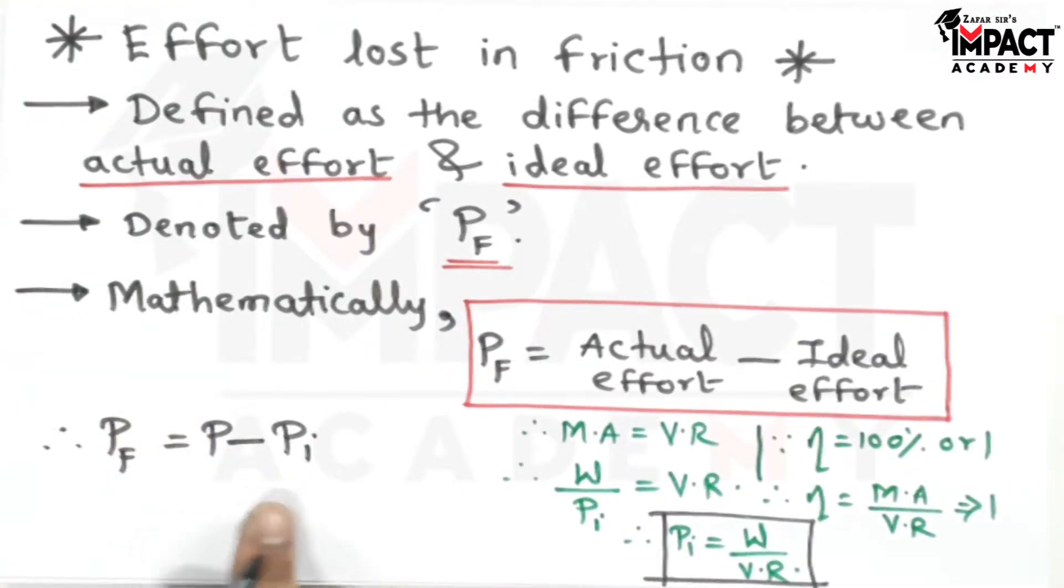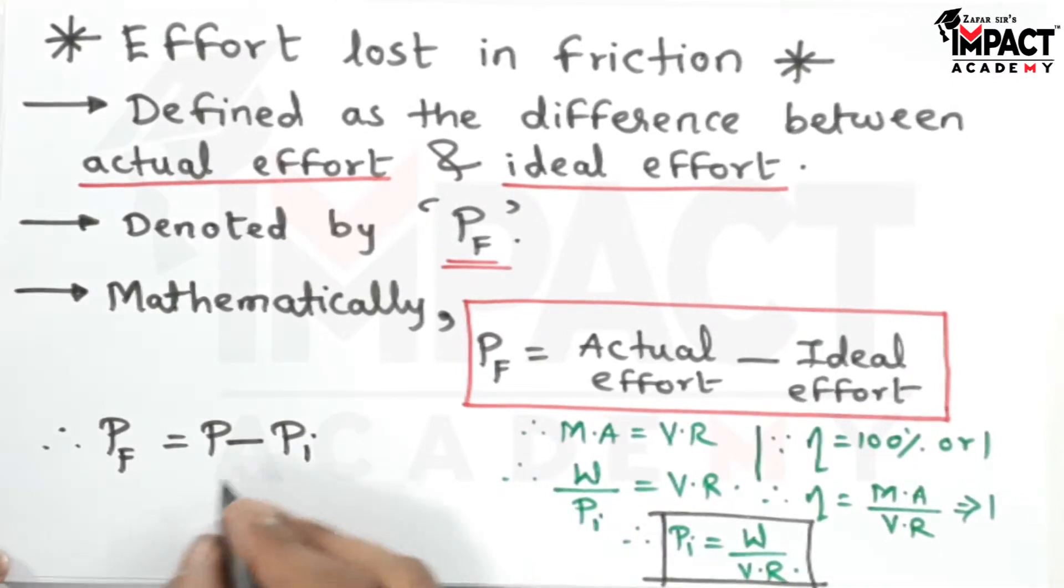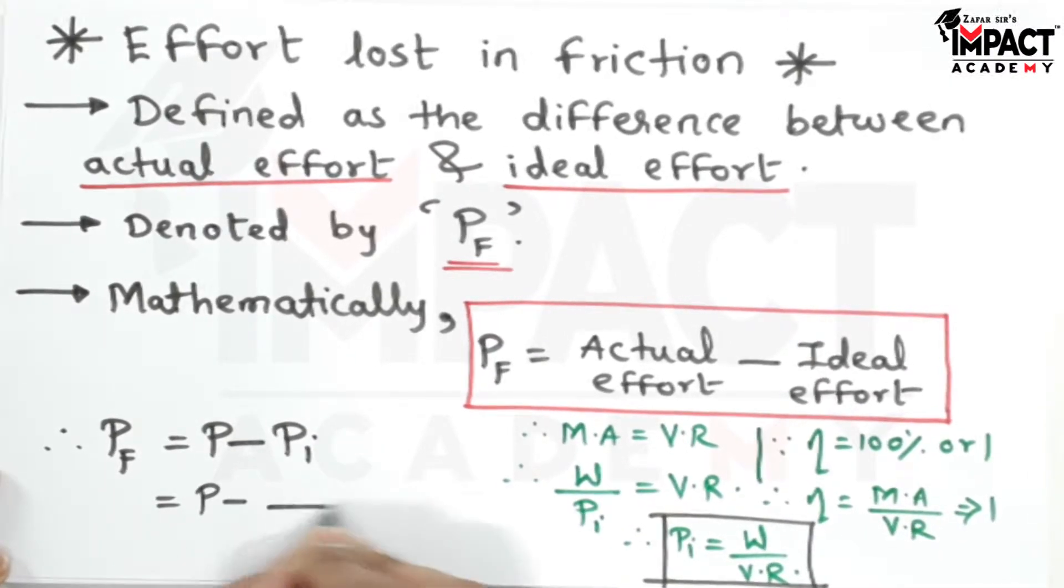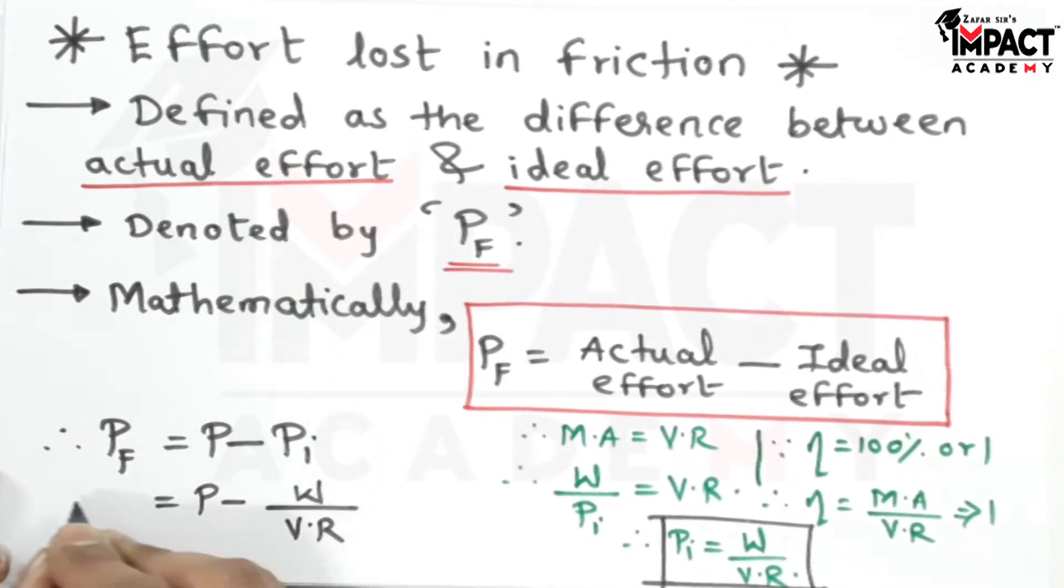So here also I would be replacing P suffix I. Instead of that we have W upon Vr, the velocity ratio.